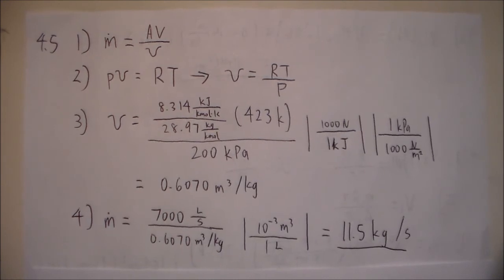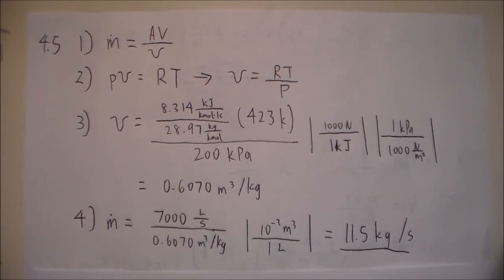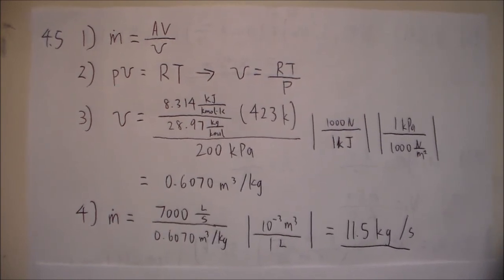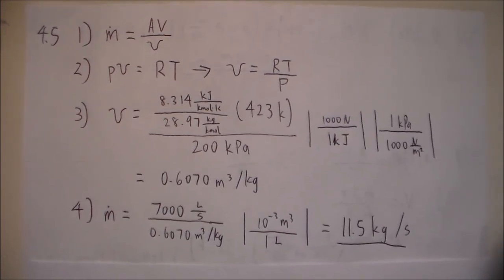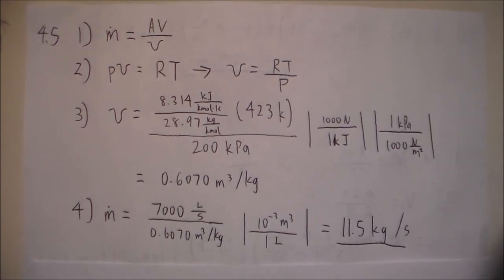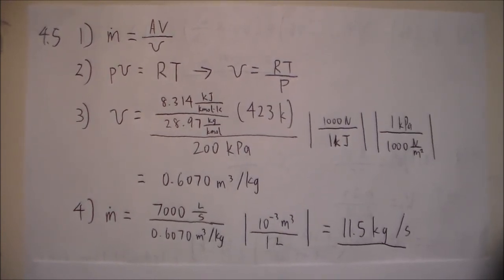The question provided us with the volumetric flow rate, so the mass flow rate would be 7,000 liters per second divided by the specific volume. After performing the unit conversions, you would get 11.5 kilograms per second.